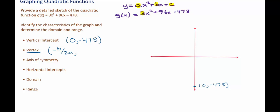So for my problem, a is 3, b is 96, and c is negative 478. After finding the x value of the vertex, I'll find the y value by simply plugging the x value into the function.